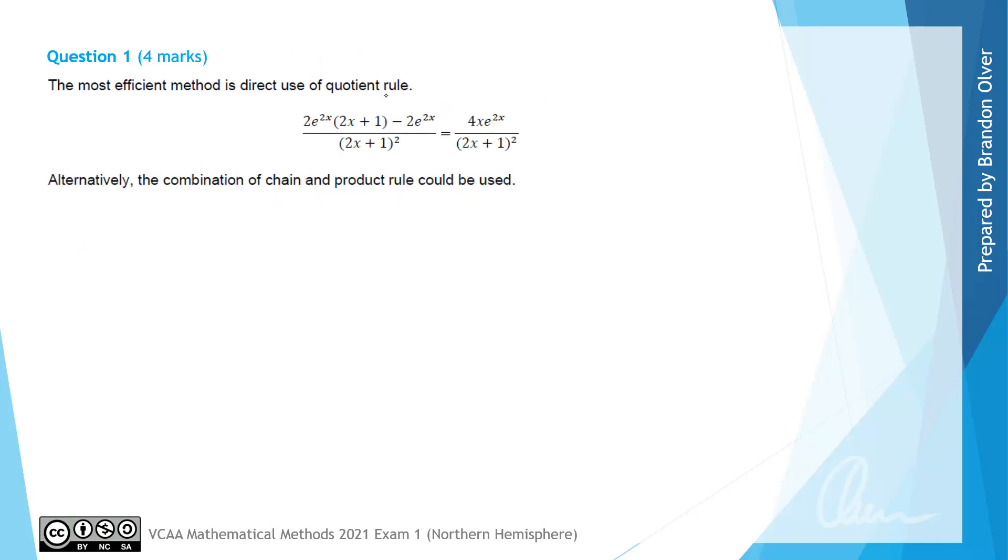And if we have a look at what the examiners said about this question, they went on to say that the most efficient method was a direct use of the quotient rule, which led to the fraction as the answer that we got on the previous slide. And you can simplify that slightly if you really wanted to by expanding those brackets. They also commented that alternatively, a combination of the chain and product rules could have been used, but that the most efficient was still the use of the quotient rule.